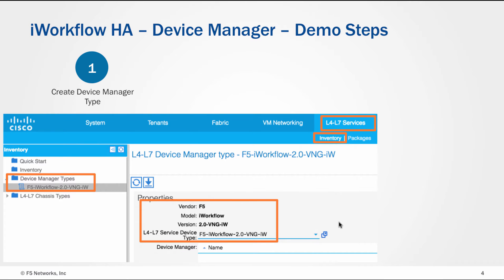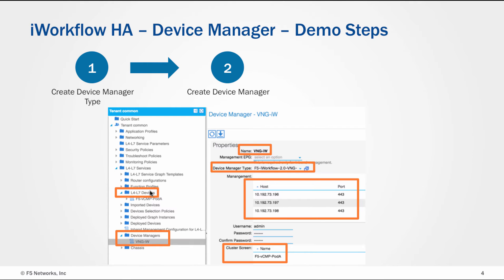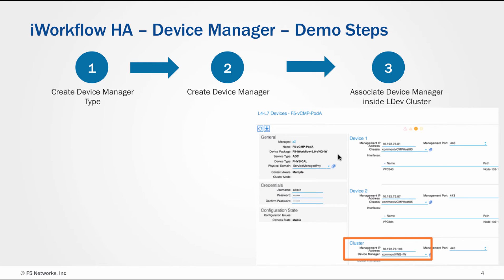The demo steps for iWorkflow-HA ACI Device Manager are very similar. First, create a L4-L7 Device Manager Type under APIC L4-L7 Services Inventory. Then, under APIC Tenant Space, L4-L7 Services, under Device Managers, create a new device manager. Enter the three iWorkflow Virtual Appliances Management IPs and associate this device manager with the device manager type created earlier. Finally, when creating L4-L7 devices, associate this device manager under Cluster Management.